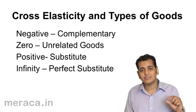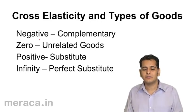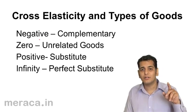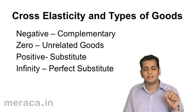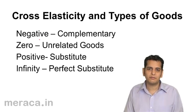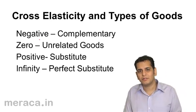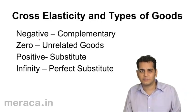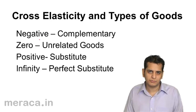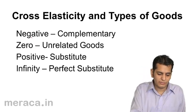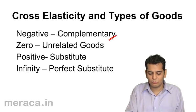If we get the elasticity as negative, negative elasticity means that there is an inverse relation. We've just now seen that there is an inverse relation between the complementary goods. The price of one complementary good inversely affects the quantity of other complementary goods. So there is a negative relation, and negative relation implies complementary goods.